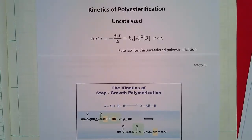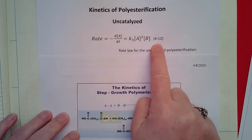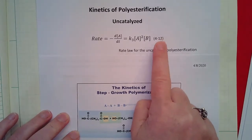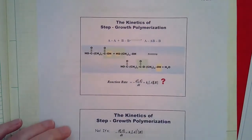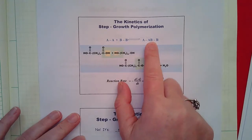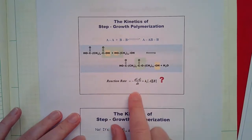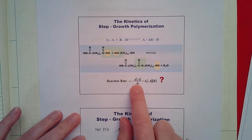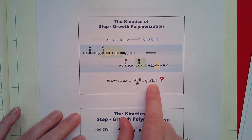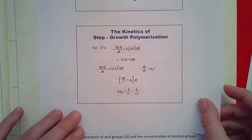In this video I'm going to talk about the kinetics of polyesterification for uncatalyzed reactions. This is the experimentally determined rate law for uncatalyzed polyesterification, and we're going to take a quick look at where that comes from. If we have a diacid reacting with a diol to make a polyester, that acid reacts with the alcohol forming the ester group. We might suspect that the rate law depends on the concentration of acid and the concentration of alcohol, but that's actually incorrect.